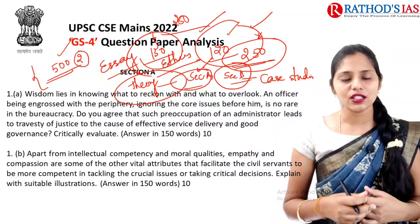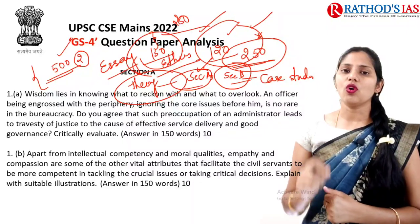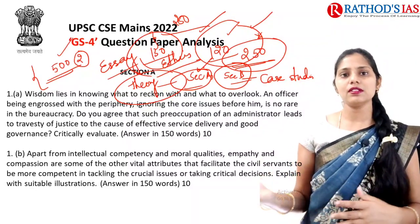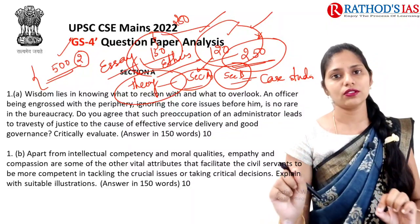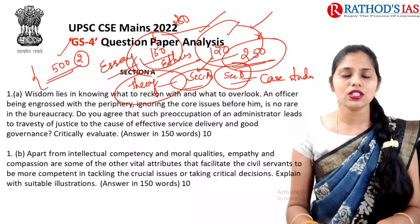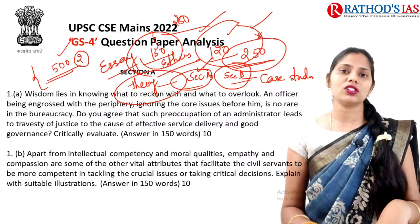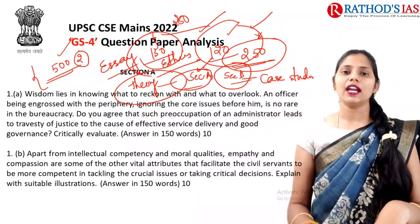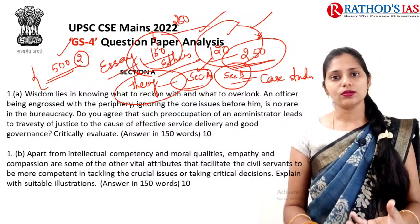In analysis of this year's paper — whether essay, case studies, or theory of ethics — what you write depends on your approach to that topic. There is no particular correct answer; whatever you write, try to give examples such that the examiner will understand your way of approach. In future lectures we are going to see each and every question, discussing what should be the introduction, body, conclusion, and we'll also talk about diagrams, flowcharts, and charts that can be included.